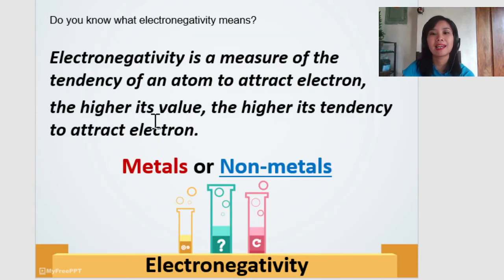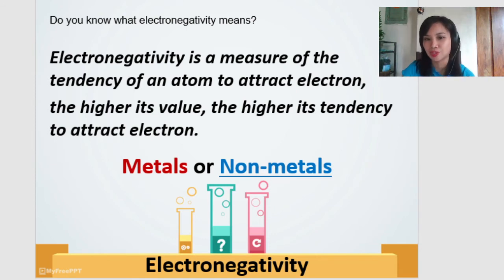So, what is electronegativity? It is a measure of the tendency of an atom to attract electron. The higher its value, the higher its tendency to attract electron. So, which of these metal or non-metals has high electronegativity? Of course, it's the non-metals. And, it has higher tendency to attract electrons, the non-metals.